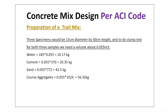For the trial mix preparation, we need three specimens — 15 cm diameter by 30 cm height cylinders (standard ACI dimensions) — requiring approximately 0.055 m³ of fresh concrete. The proportions per batch are: water = 10 kg, cement = 20 kg, sand = 42 kg, and coarse aggregate = 56.3 kg.